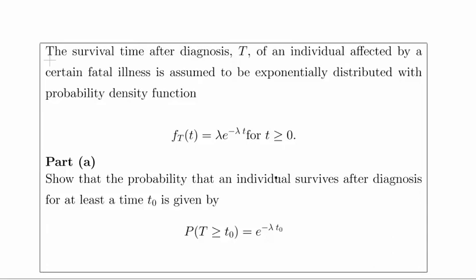In this presentation we are going to look at the first half of a survival analysis question. The survival time after diagnosis t of an individual affected by a certain fatal illness is assumed to be exponentially distributed with a probability density function f(t) = λe^(−λt) for t greater than or equal to zero. So this is the PDF.